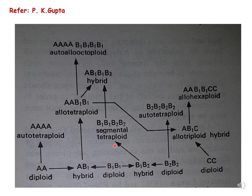The next term is segmental polyploidy. What is segmental polyploidy? Segmental polyploidy is when the duplication involves duplication of related genomes. For example, here you can see B1B1 is one genome and B2B2 is another genome which are related to each other.